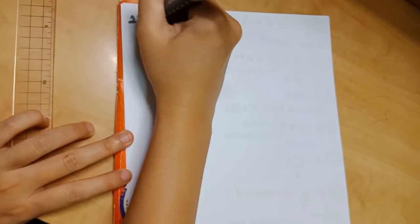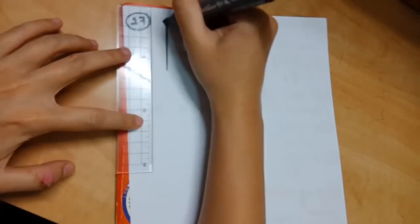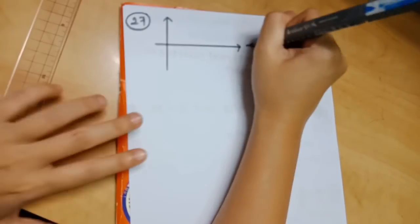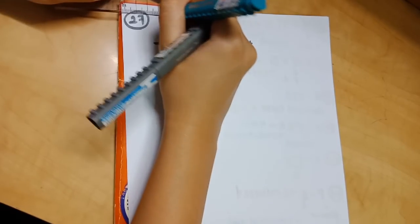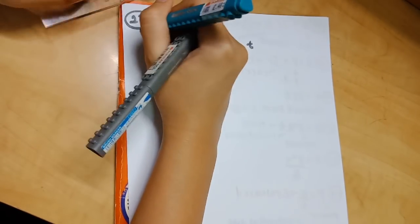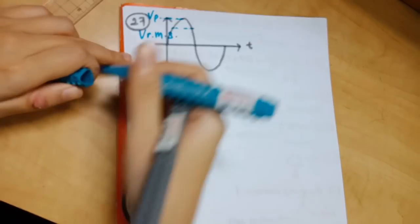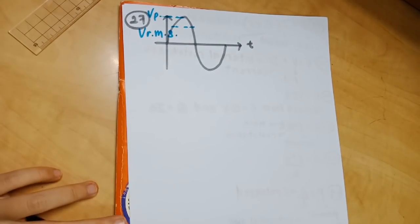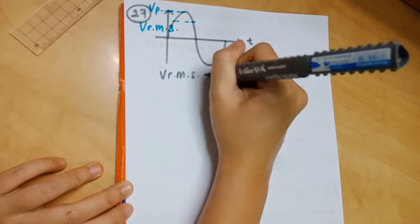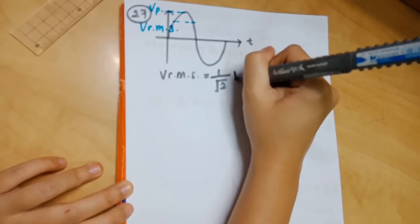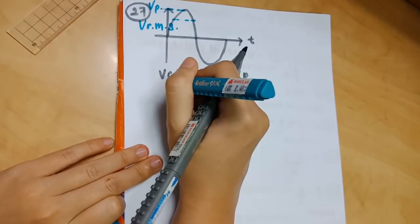Number 27: I'm drawing a graph to make you understand this formula better. I'm labeling VP and VRMS. The formula is VRMS equals 1 over square root 2 times VP. VRMS refers to the effective value, while VP refers to the peak value.